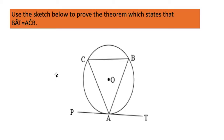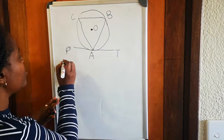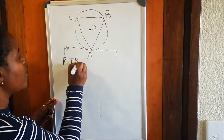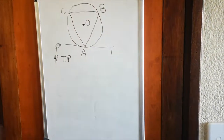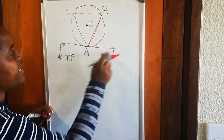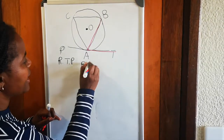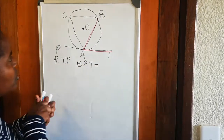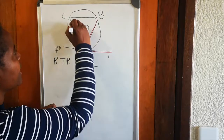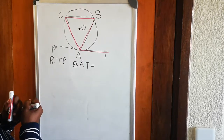We're going to go to a whiteboard now to do the proof. The first thing we must do is write what we are required to prove. We're going to use a red pen so you can see clearly. We are required to prove that angle B-A-T is equal to angle A-C-B.